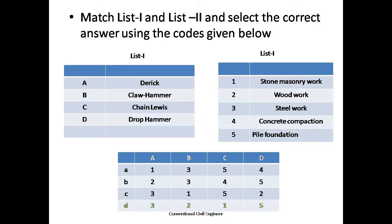Chain Lewis is used for stone masonry. Drop hammer is used for pile foundation. So the answer D is correct.